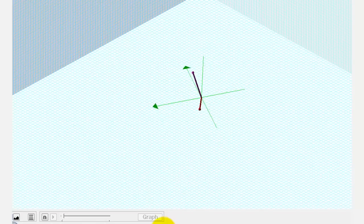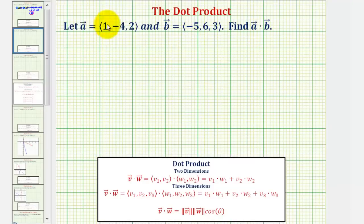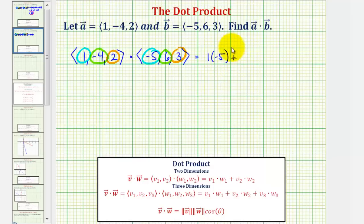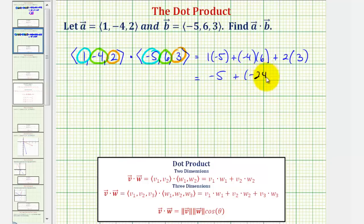Let's take a look at a second example with the same question but different vectors. Vector a dotted with vector b would be equal to one times negative five, plus negative four times six, plus two times three. So we have one times negative five, plus negative four times positive six, plus two times three.